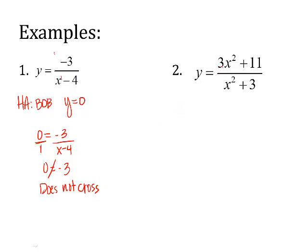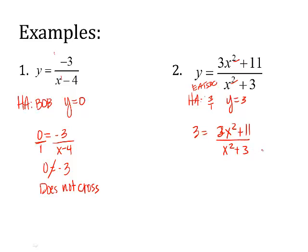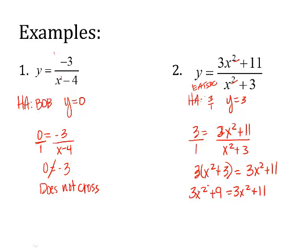Let's look at this next one. For the horizontal asymptote, using Bobby O'Bottin O'HTC: the highest exponents are the same on top and bottom, so I divide the leading coefficients — that's three over one — giving y = 3. I take that 3 and set it equal to the function, then cross multiply: 3 times (x² + 3) equals x² + 11, which gives 3x² + 9 = 3x² + 11. The 3x² terms cancel, leaving 9 = 11. That's not correct, so the function does not cross the horizontal asymptote.